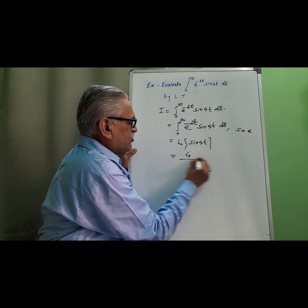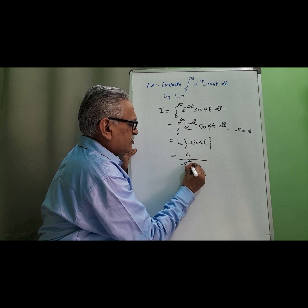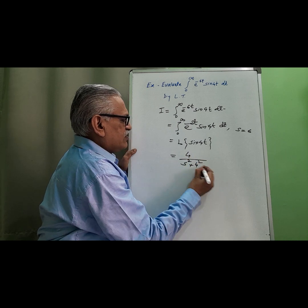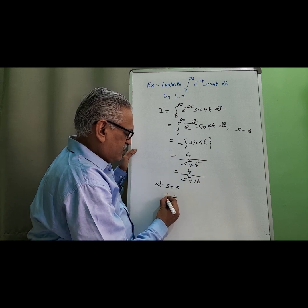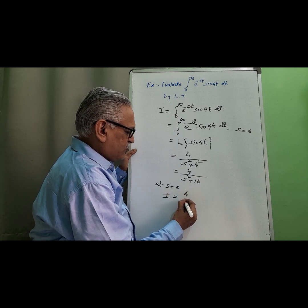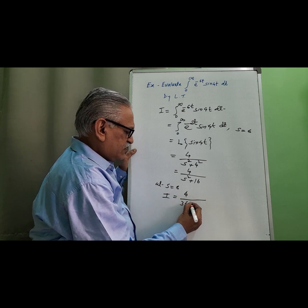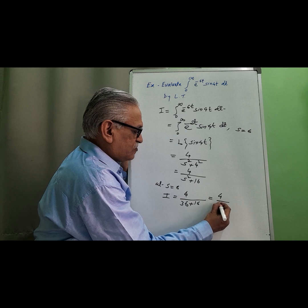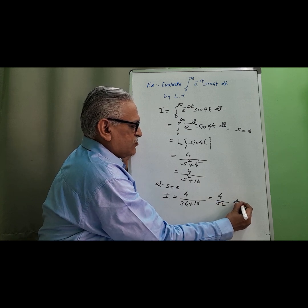Applying the Laplace formula, this equals 4 upon s squared plus a squared, where a equals 4. Substituting s equals 6, we get 4 upon 6 squared plus 4 squared, which is 4 upon 36 plus 16, giving us 4 over 52. And therefore, this is the value.